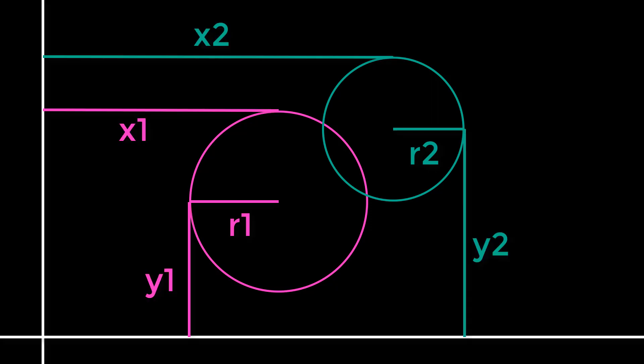Now intuitively, if you were to add those two radii up, then that would give you the maximum distance between those two circles where they are still touching. So if the circles were any closer together than the sum of their two radii, then they must be colliding and otherwise they're not.